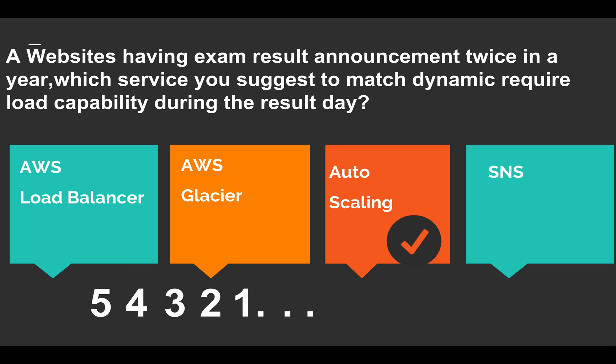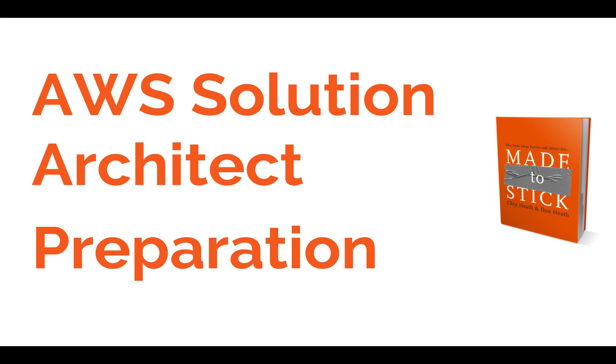The answer is Auto Scaling. Auto Scaling matches the dynamic requirements of your load by automatically creating new instances to handle traffic spikes. It only creates instances at specific trigger points, so it does not impact your normal day-to-day costs, making it an easy and cost-saving solution. Thank you for watching — we'll return with new questions soon.